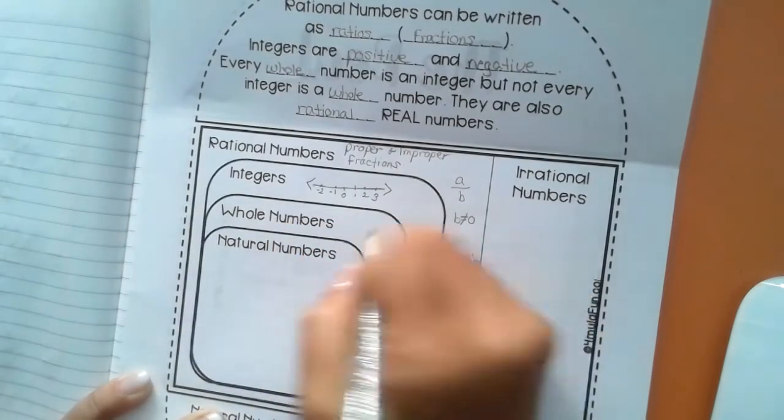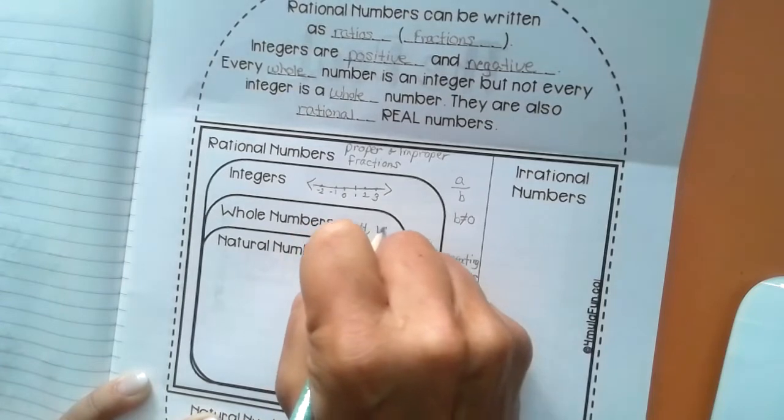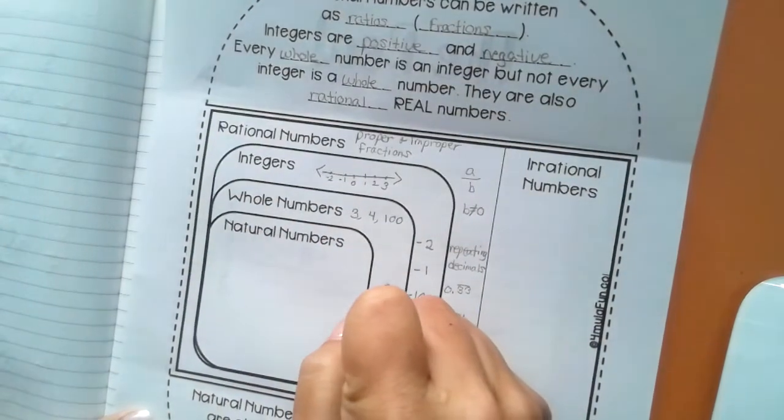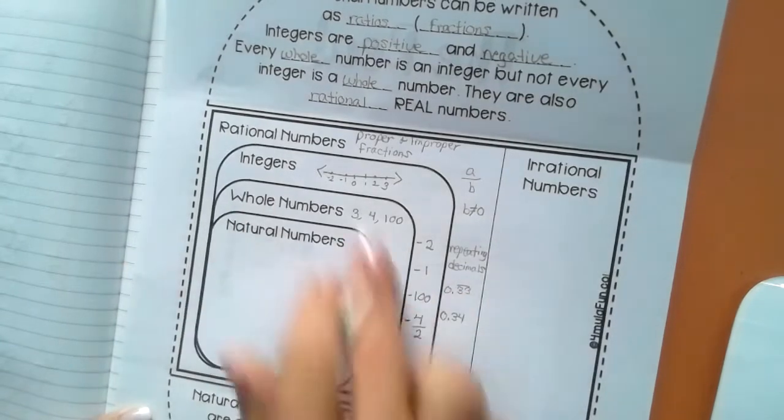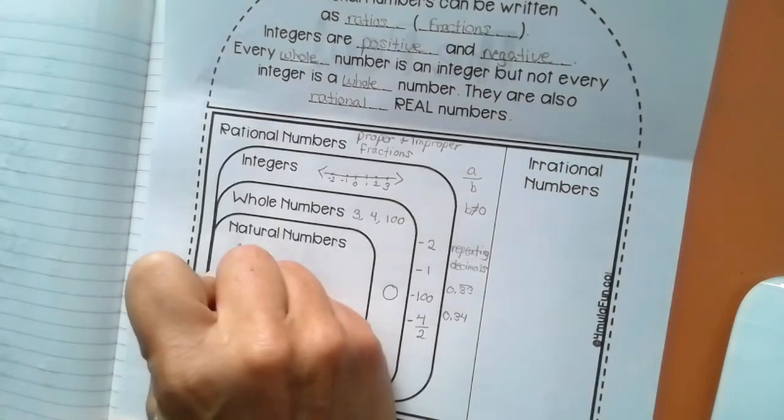Whole numbers. 3, 4, 100. But again, down here, 0 is really the only whole number that we're concerned about because our natural numbers begin at 1.